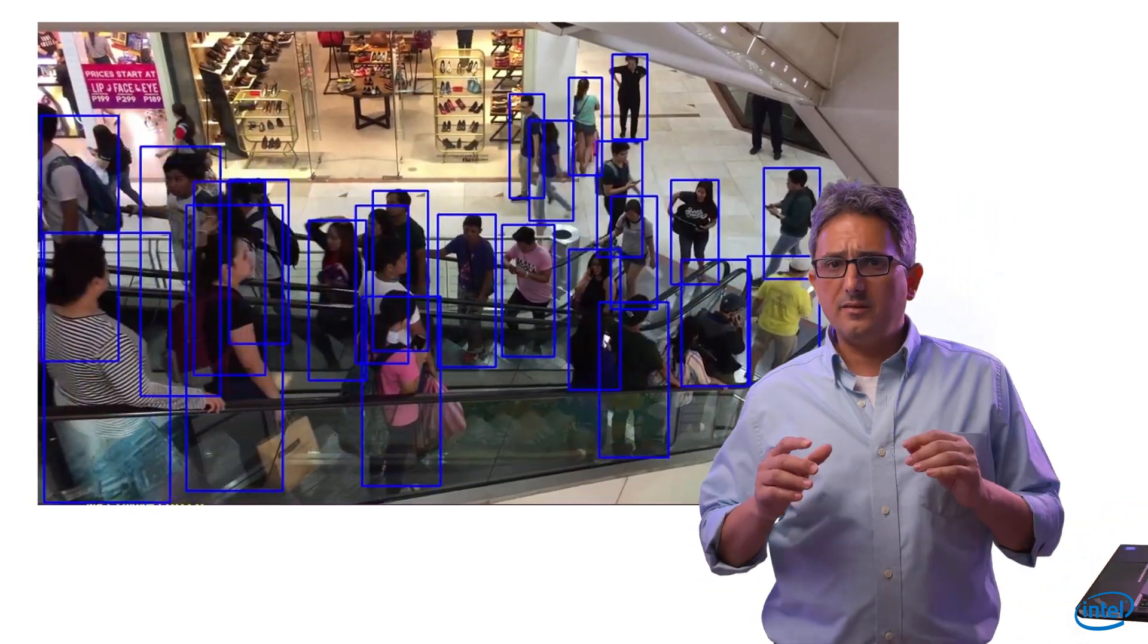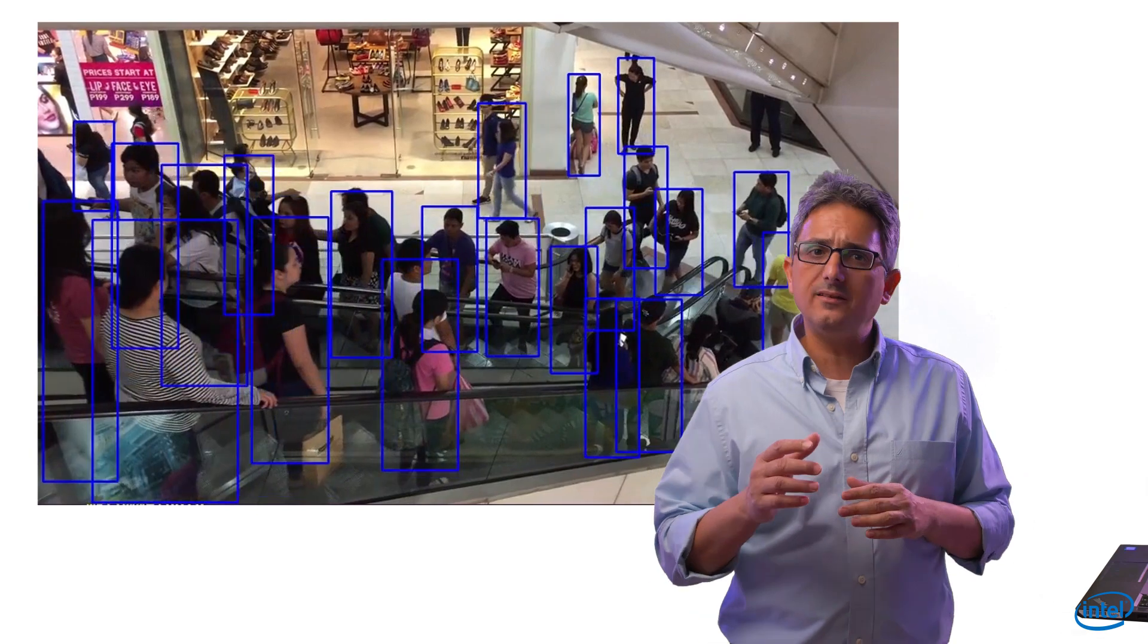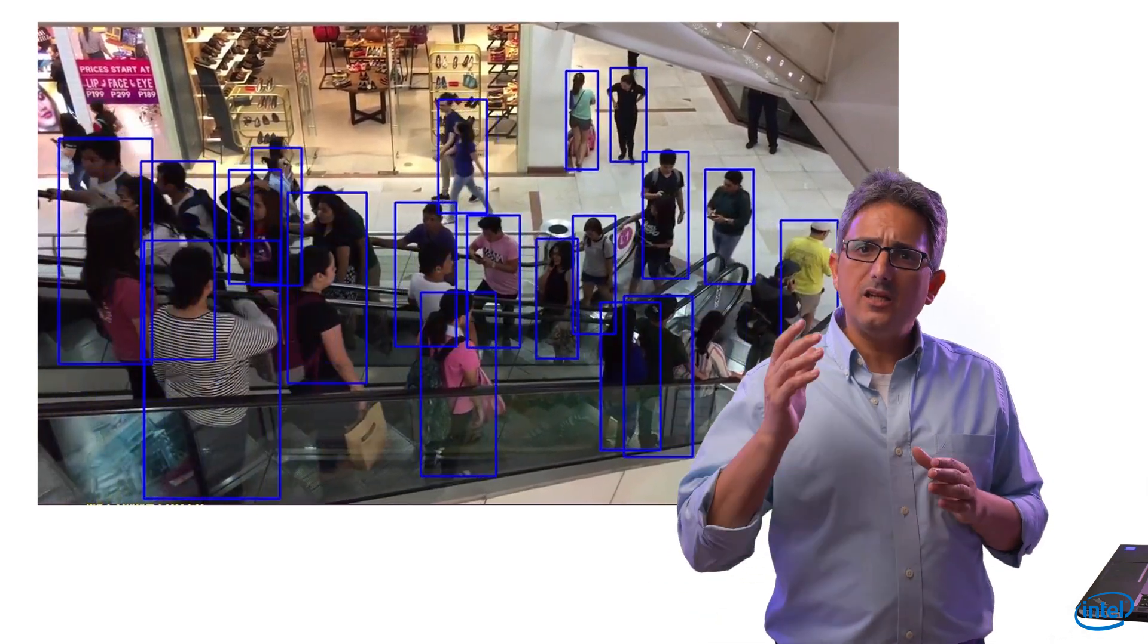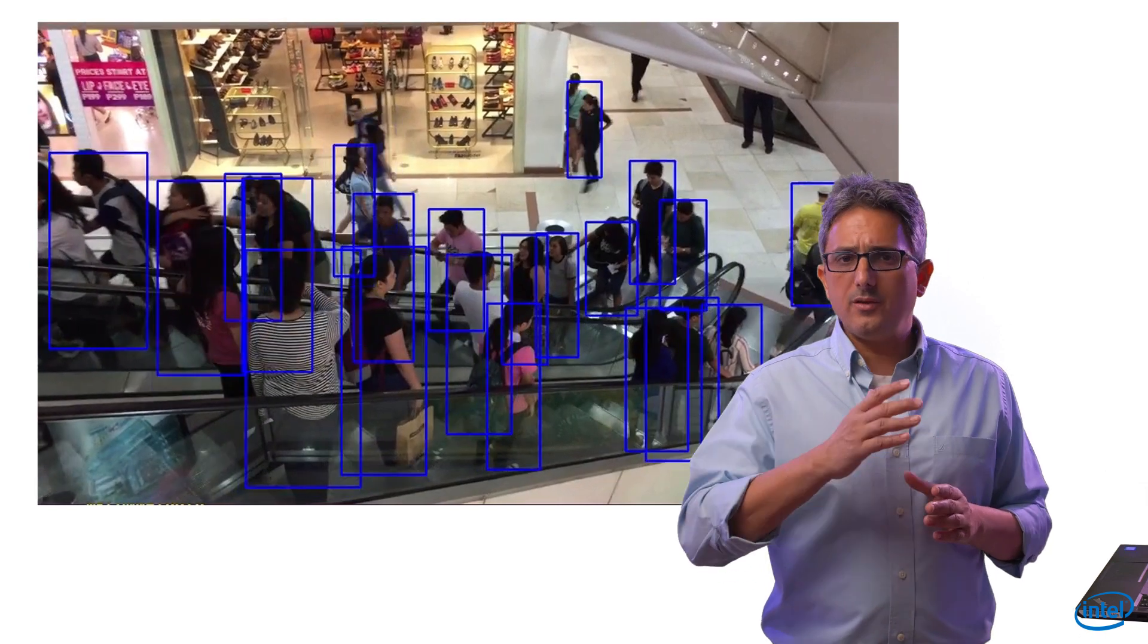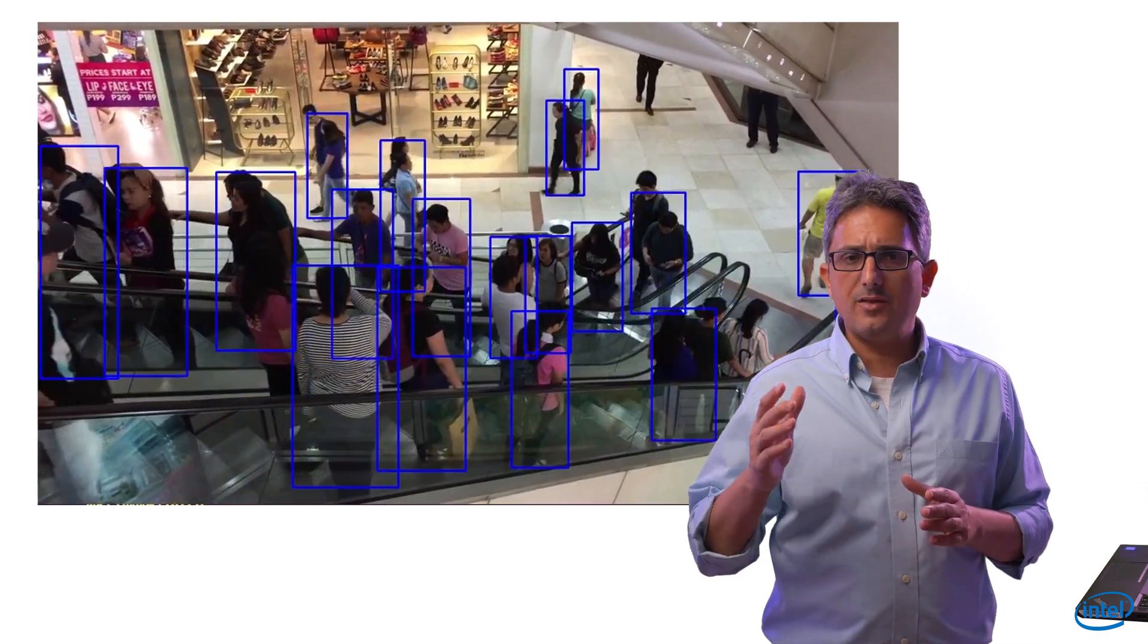We will use another model for the re-identification. Basically each of the detected persons will be compared to the other person detected at the previous frames.